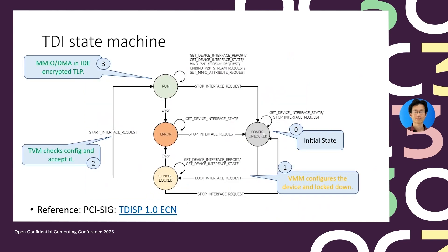According to the spec, each TDI has a full state machine. The initial state is config unlocked, where anyone can configure the TDI. Once configuration is done, the host sends lock interface to transition the TDI to config locked state — no more configuration changes are allowed. The TVM is expected to collect the device configuration information and perform verification to determine whether to accept the TDI. If the TVM decides to accept, it sends a start interface message to change the TDI to the run state. Once in run state, the TDI can process trusted MMIO and trusted DMA in IDE-encrypted TLPs. If any error occurs after the TDI is locked, the TDI moves to an error state and no more trusted MMIO or DMA is processed.